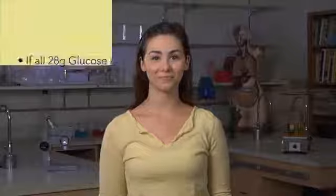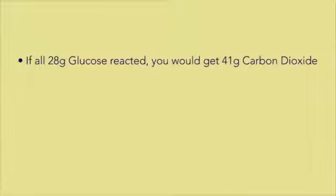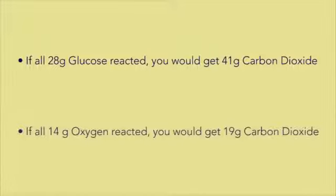So, which one gives you less product? This is your limiting reactant. If all the grams of glucose reacted, you would get 41 grams of carbon dioxide. If all the grams of oxygen reacted, you would have 19 grams of carbon dioxide. Therefore, the amount of oxygen limits how much products you can make. In other words, you will run out of oxygen before you run out of glucose.